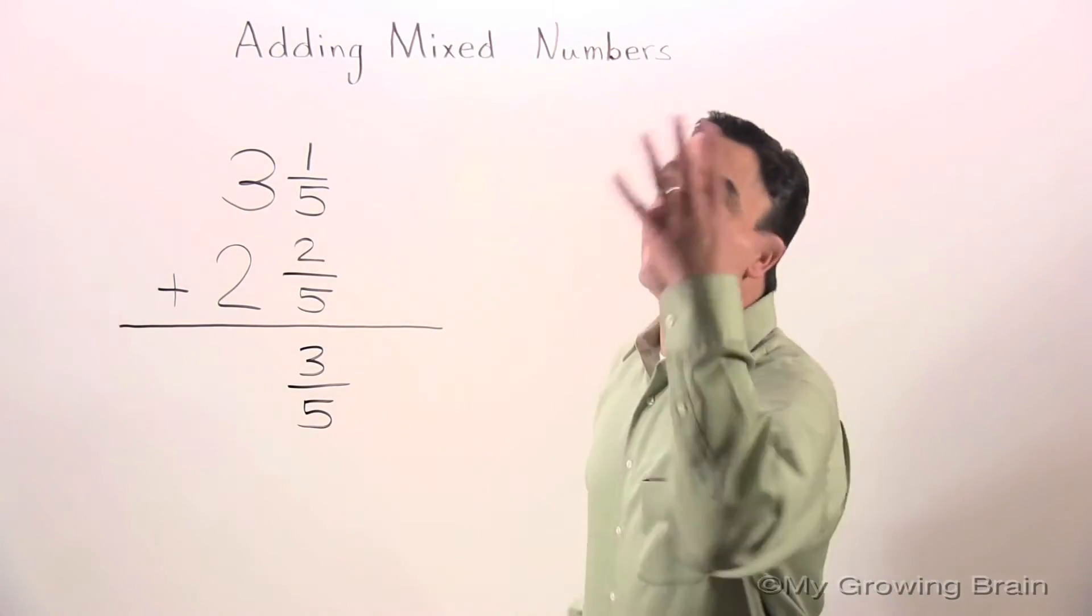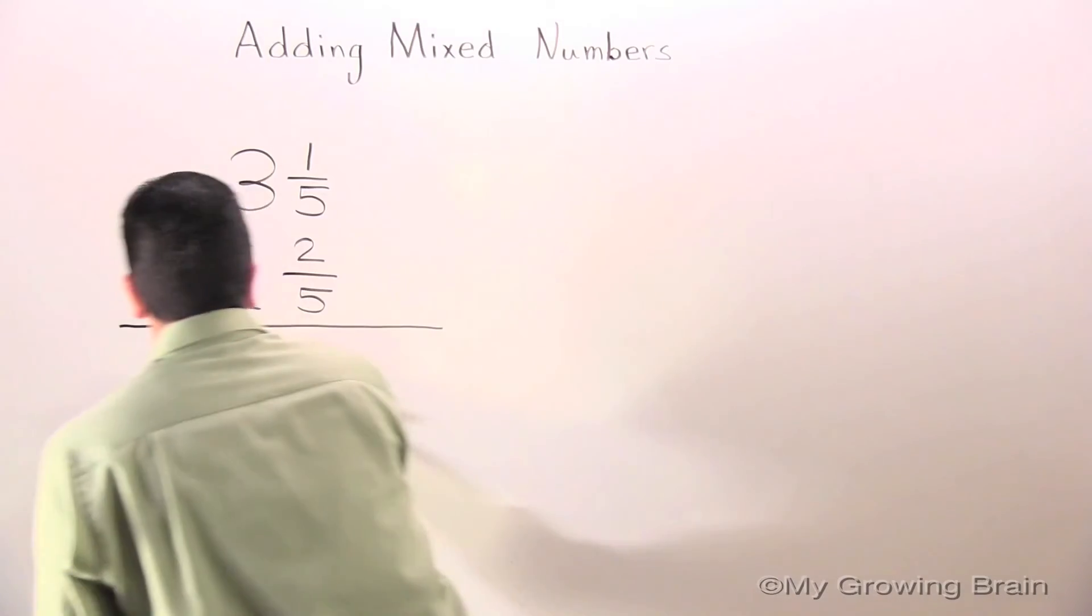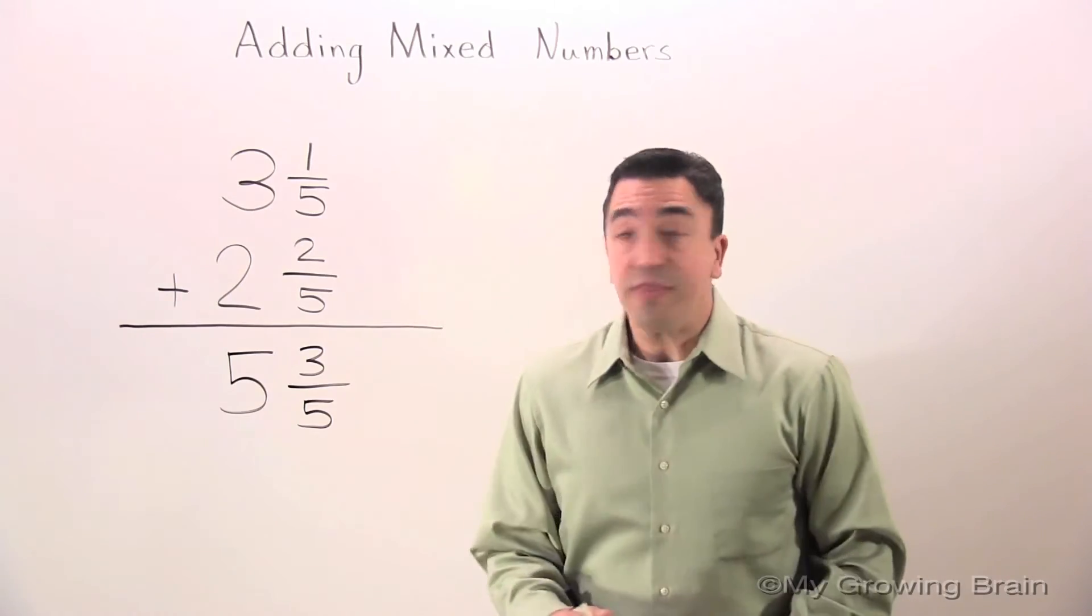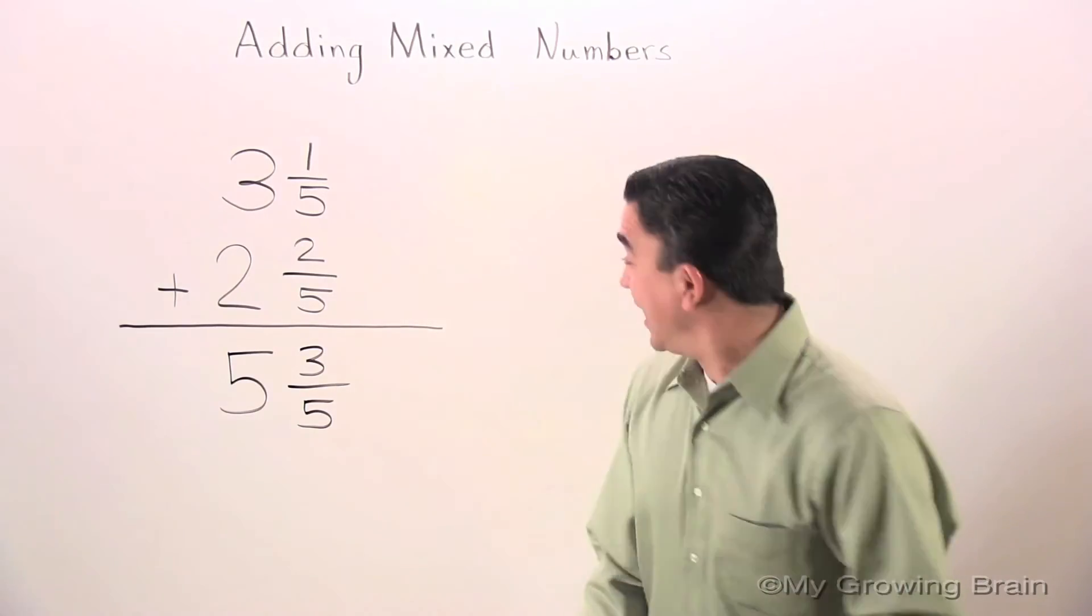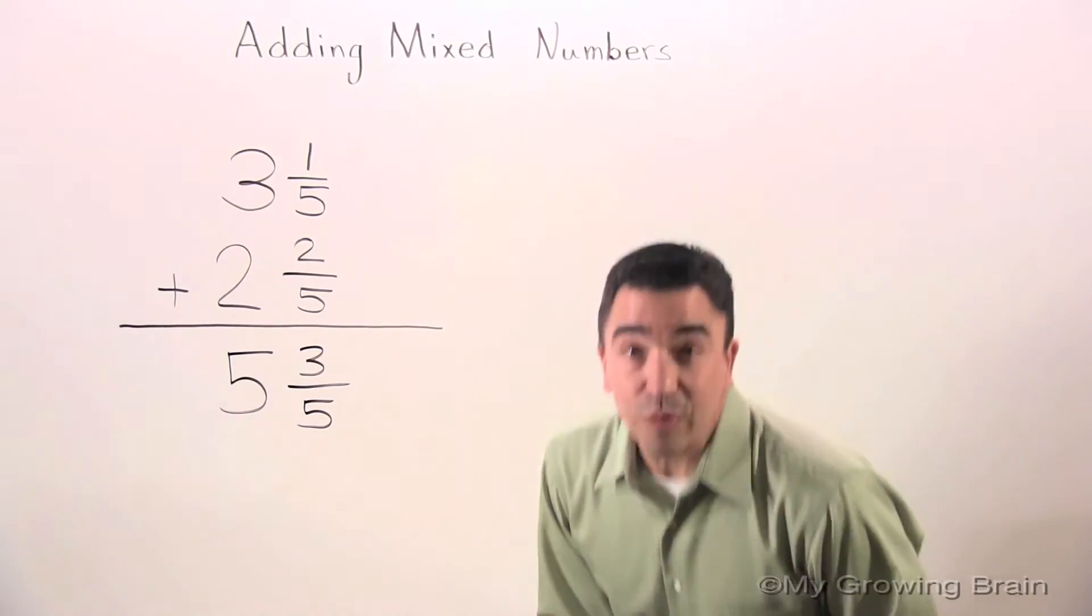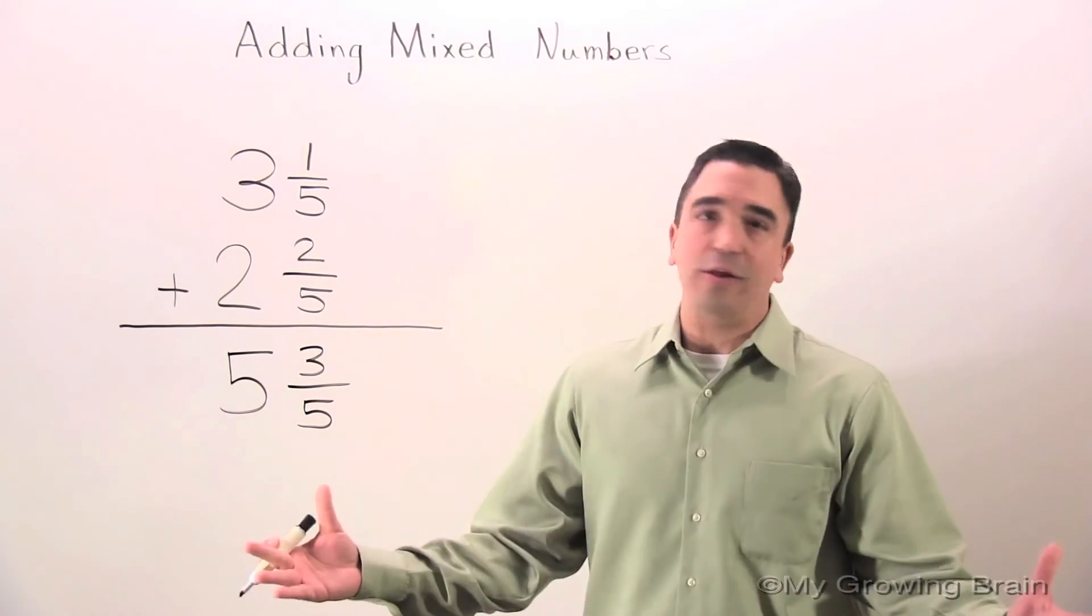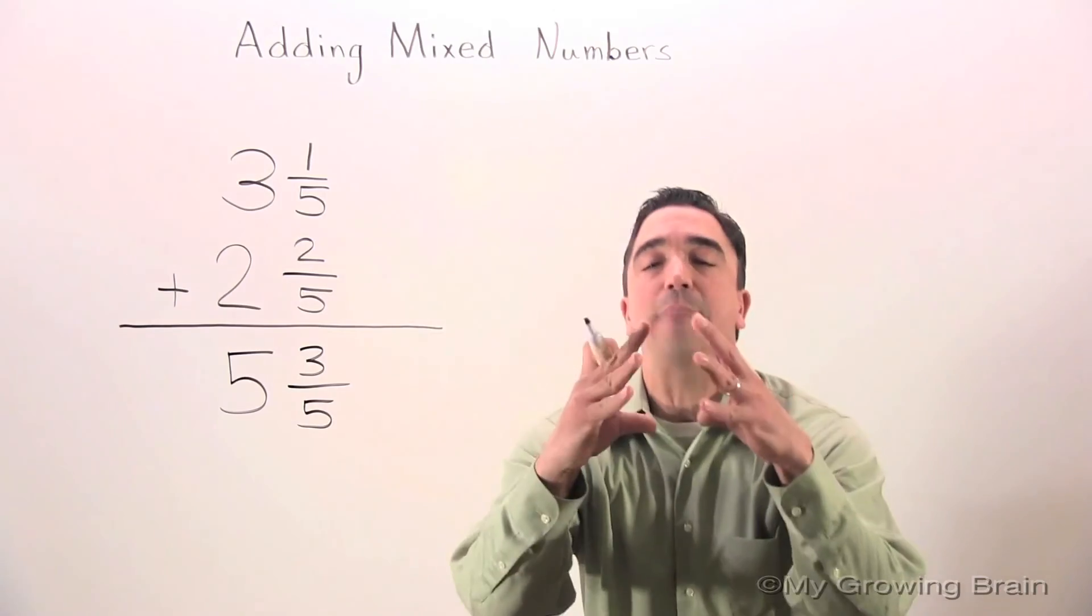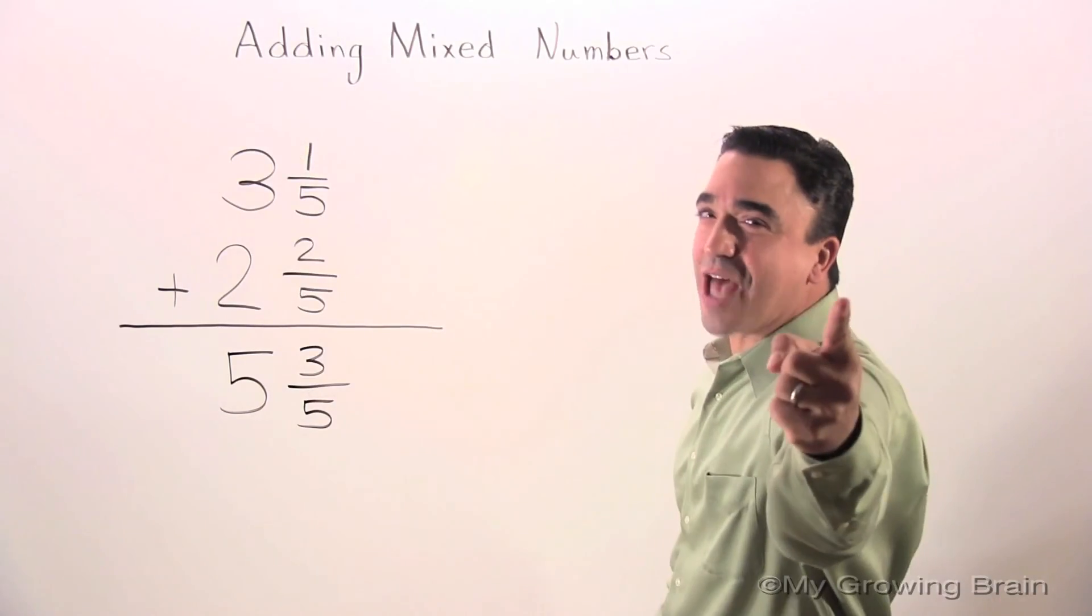Three and one-fifth plus two and two-fifths equals five and three-fifths. This concludes our lesson on adding mixed numbers. Coach Mike at My Growing Brain - challenge yourself!